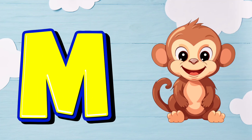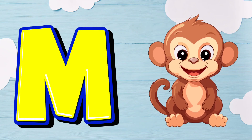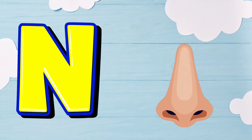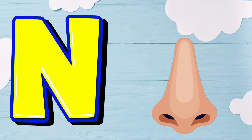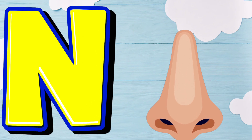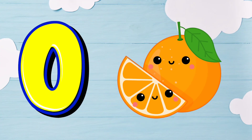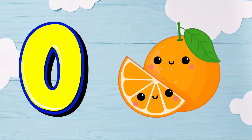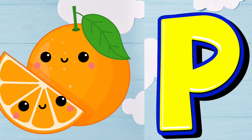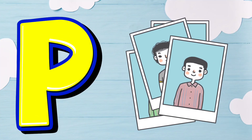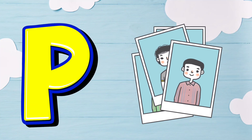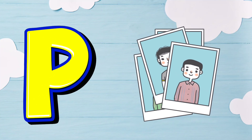M is for Monkey. M. Monkey. N is for Nose. N. Nose. O is for Orange. O. Orange. P is for Picture. P. Picture.